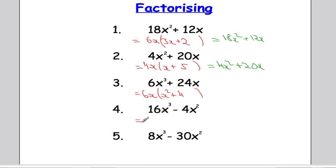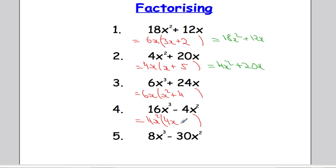Quickly moving on to example 4, getting trickier again. Let's start by looking at the numbers: 16 and 4 — what can I factor out? Both are multiples of 4, so let's factor out that 4. Let's look at the letters: we've got x cubed and x squared. What can I factor out of both? I can actually factor out x squared. What would I multiply 4x squared by to get 16x cubed? I'll have to multiply by 4, and to turn x squared into x cubed I multiply by x. What would I multiply 4x squared by to get 4x squared? It's got to be 1.